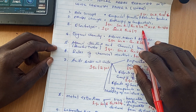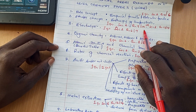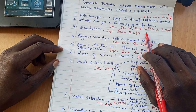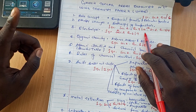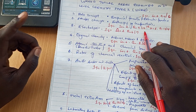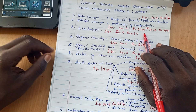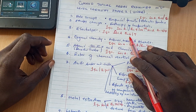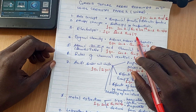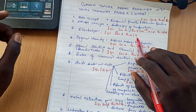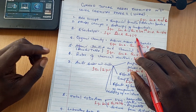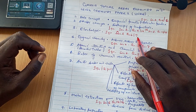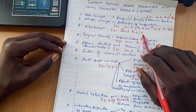The third topic is electrolysis. There must always be one question on electrolysis. If it is in section A, it must be question number 6 or question number 7. Sometimes it is brought in section B, but in most cases it appears in section A.